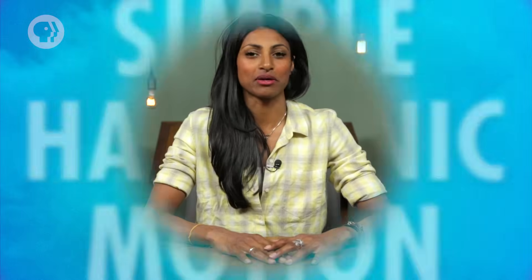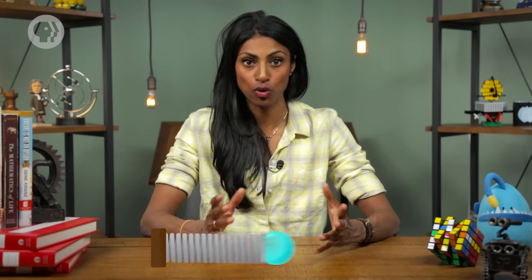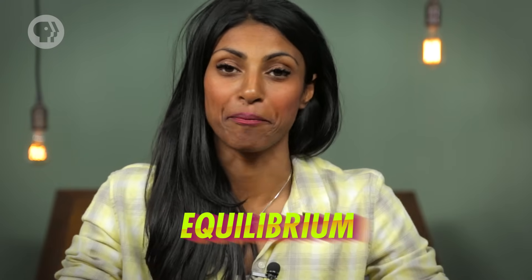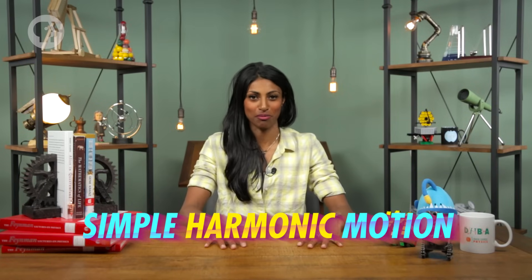But before we had the Millennium Bridge as a real-life example, physicists often described simple harmonic motion in terms of a ball attached to a horizontal spring lying on a table. While it's lying there at rest, it's in equilibrium. And when you move the ball so that it stretches the spring, then let go, the ball keeps moving back and forth forever, in a frictionless world. That back-and-forth motion caused by the force of the spring is simple harmonic motion.